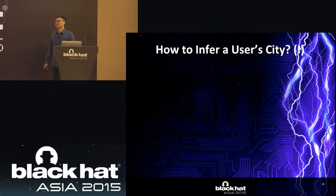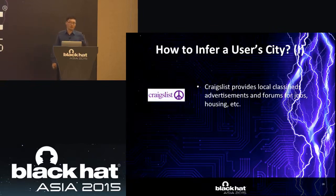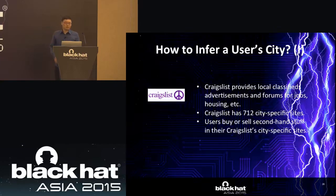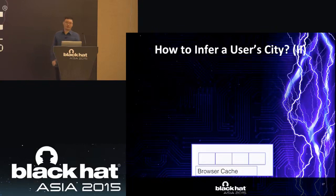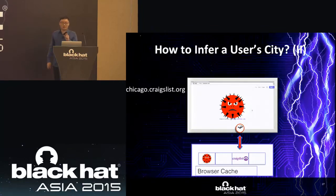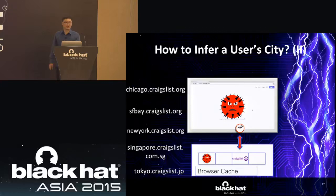For city inference, we use Craigslist. Craigslist provides local information, news, advertisements, jobs, and housing, with 712 city-specific sites. Users buy or sell second-hand stuff on their own city's Craigslist website. Based on this, the attacker can measure loading time of every Craigslist city-specific site — Chicago, San Francisco, New York City, Singapore, or Tokyo — and determine which subset is cached in the browser, further inferring the user's city.